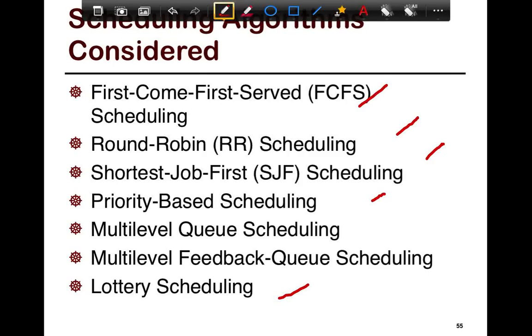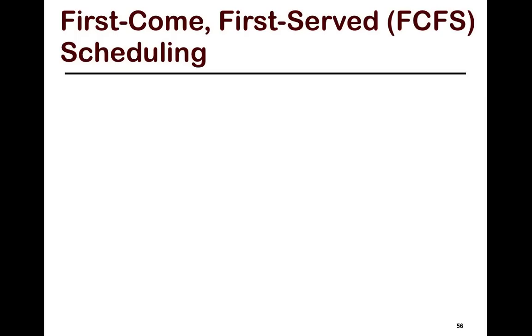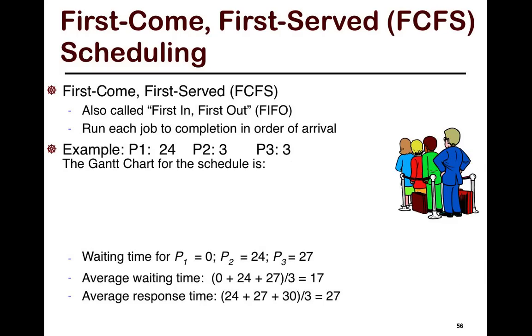First we look at FCFS, which is the simplest one. FCFS essentially is first come first serve. It's like a queue, essentially a FIFO order. It's very simple. It looks at each job that comes in the queue and then runs it to completion in the order of arrival.